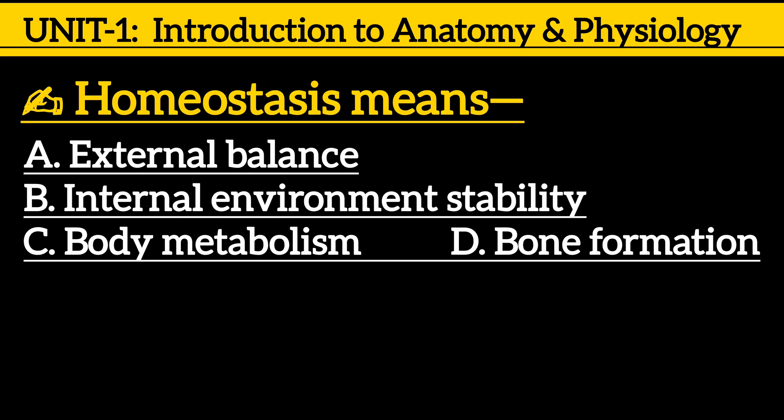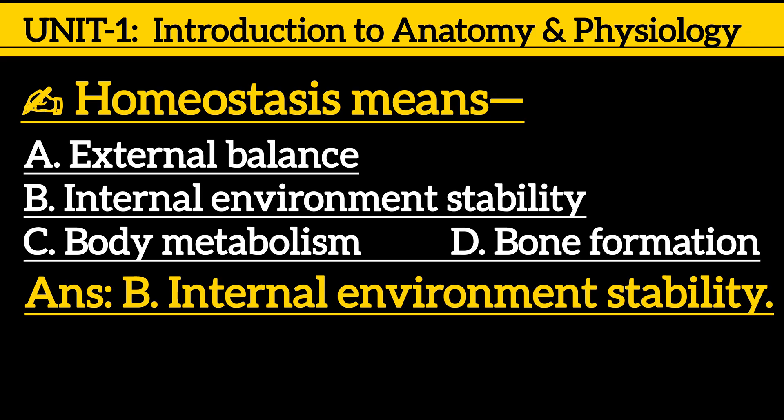Next one: Homeostasis means — option A: external balance, option B: internal environment stability, option C: body metabolism, option D: bone formation. The correct answer is option B: internal environment stability.